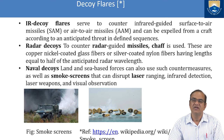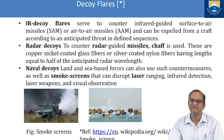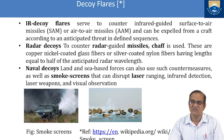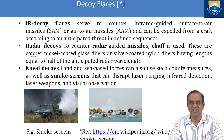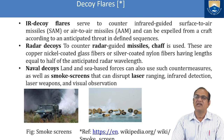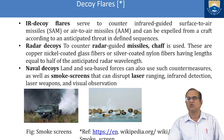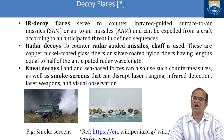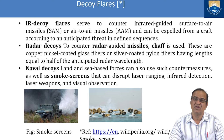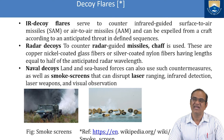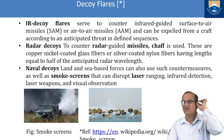To counter radar-guided missiles, chaff (CHF) is used. These are copper-nickel coated glass fiber or silver-coated nylon fiber having a length equal to half the anticipated radar wavelength. Radar-guided missiles such as the S-500 can be countered using this chaff with the appropriately sized fibers.